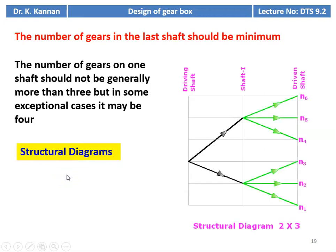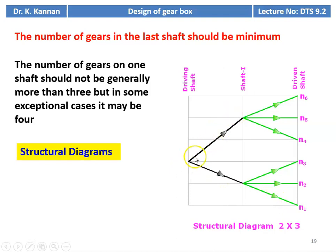This is the structural diagram for the 2×3 arrangement. We have the driving shaft, first shaft, and driven shaft. We have 6 different speeds: N1, N2, N3, N4, N5, N6, selected from the R40 series. N6 is the maximum speed and N1 is the minimum speed. For the driving shaft, by engaging appropriate gears, we get two output speeds for shaft 1. From shaft 1 to the driven shaft, for every speed we get three different speeds, giving six different output speeds on the driven shaft.